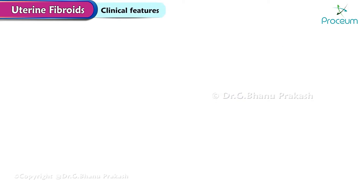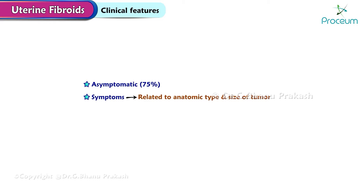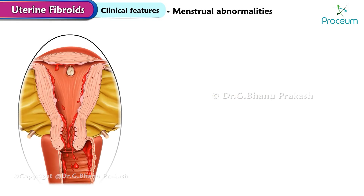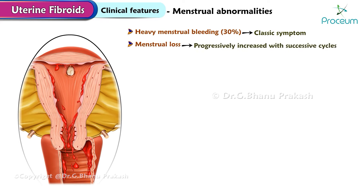Clinical features: the majority of fibroids remain asymptomatic, 75%. The symptoms are related to the anatomic type and size of the tumor; the site is more important than the size. Menstrual abnormalities: heavy menstrual bleeding, in 30% of cases, is a classic symptom of symptomatic fibroid. The menstrual loss is progressively increased with successive cycles.